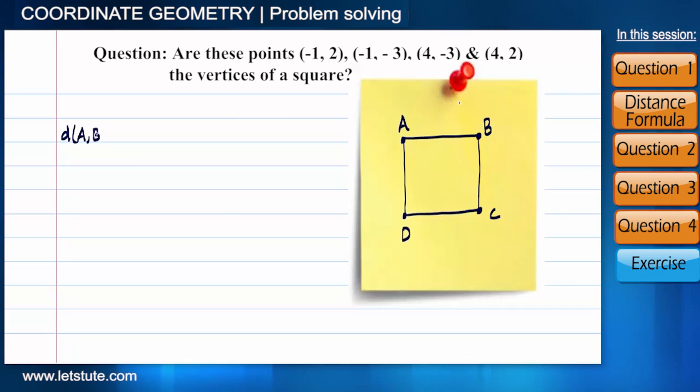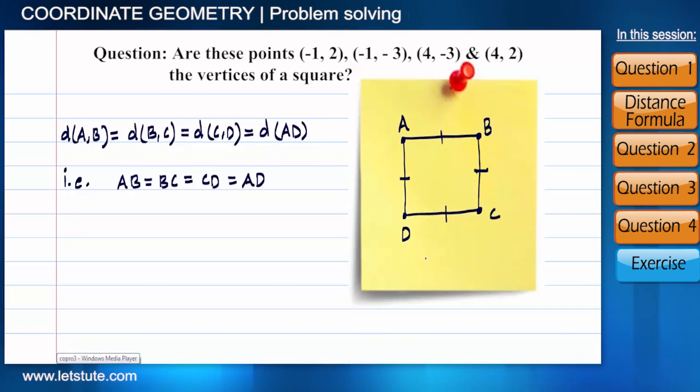Now if AB, BC, CD, and AD are equal, does that mean it's a square? So we'll find all the distances. But still this is not the whole solution.